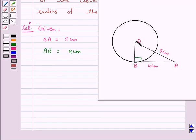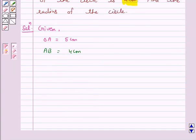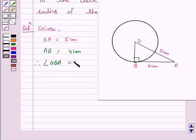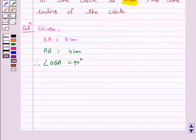Therefore angle OBA is equal to 90 degrees because AB is a tangent to the circle.